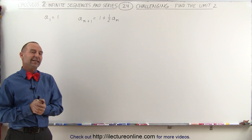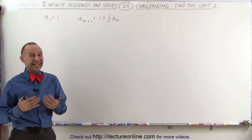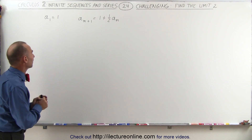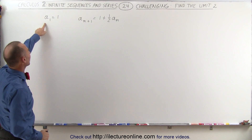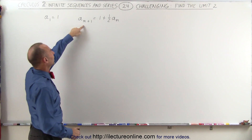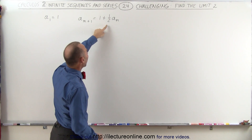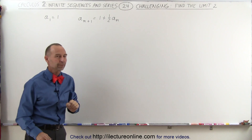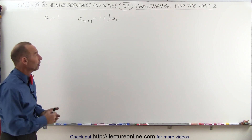Welcome to ElectronLine. To find the limit of our next sequence, we have to use some special tricks here. We're told that the first element is equal to 1, and every subsequent element, like a(n+1), is equal to 1 plus half the previous element. So what does this converge to, if it converges at all?